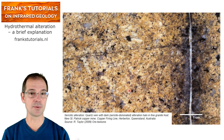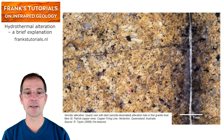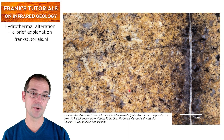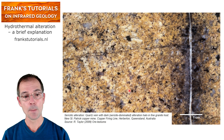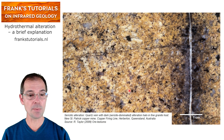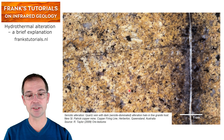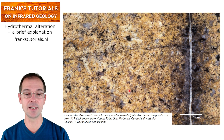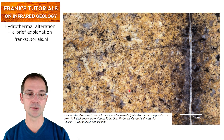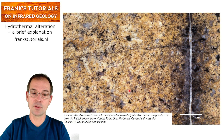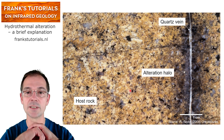Let's have a look at this photograph. It is a photo of a fine-grained granite, taken from the book by Taylor. What we can see is a quartz vein with a dark sericite-dominated alteration halo in the fine-grained granite host. And it is from the New St. Patrick copper mine in Queensland, Australia.